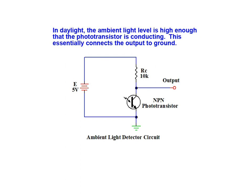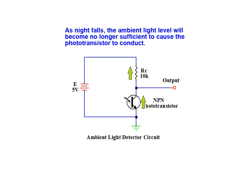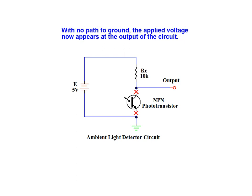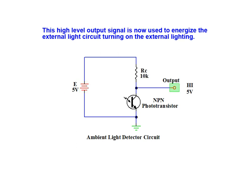In the daylight, the ambient light level is high enough that the phototransistor is conducting. This essentially connects the circuit's output to ground. As night falls, the ambient light level will no longer be sufficient enough to cause the phototransistor to conduct. With no path to ground, the applied voltage now appears at the output of the circuit. This high-level output signal is now used to energize the external light circuit, which in turn turns on the external lighting.